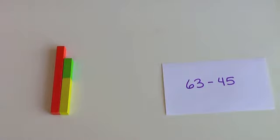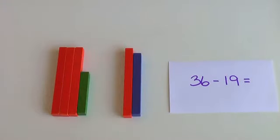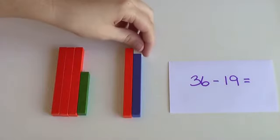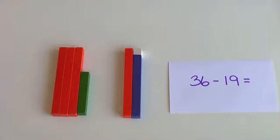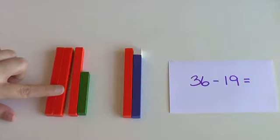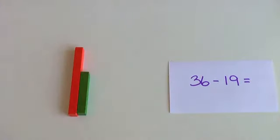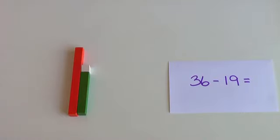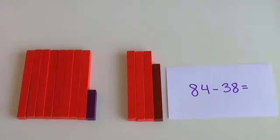All right, 36 minus 19. Well, I think I would rather do 36 minus 20, that's a lot easier. So I'm just going to put a little 1 here, and I'm going to take away 20 instead of 19. So 36 minus 20 is 16. But what about that little 1? I took away 1 too many, didn't I? So I need to add that 1 back in. So the answer is 17.